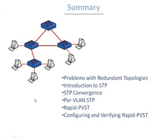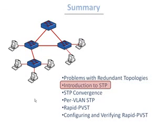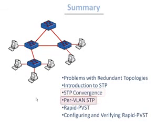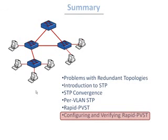To recap this lecture: first, we introduced problems in redundant topologies — broadcast storms, multiple frame copies, and MAC address table instabilities. Then we introduced spanning tree protocol, which dynamically blocks redundant ports and unblocks them if the active link fails. We discussed how spanning tree reconverges through listening, learning, forwarding, and blocking states. We then covered per-VLAN spanning tree protocol for environments with VLANs and trunks, followed by rapid per-VLAN spanning tree protocol, which uses an alternate port instead of a blocking port for faster convergence. Finally, we learned how to configure and verify rapid spanning tree protocol.